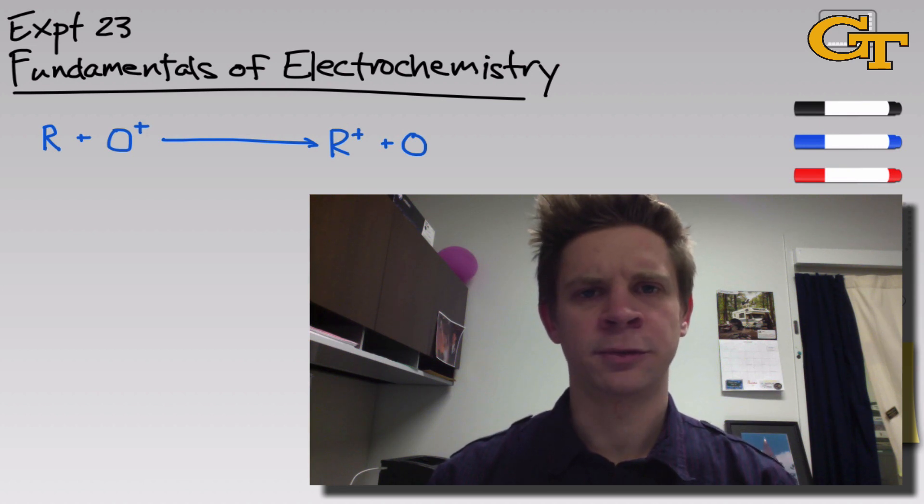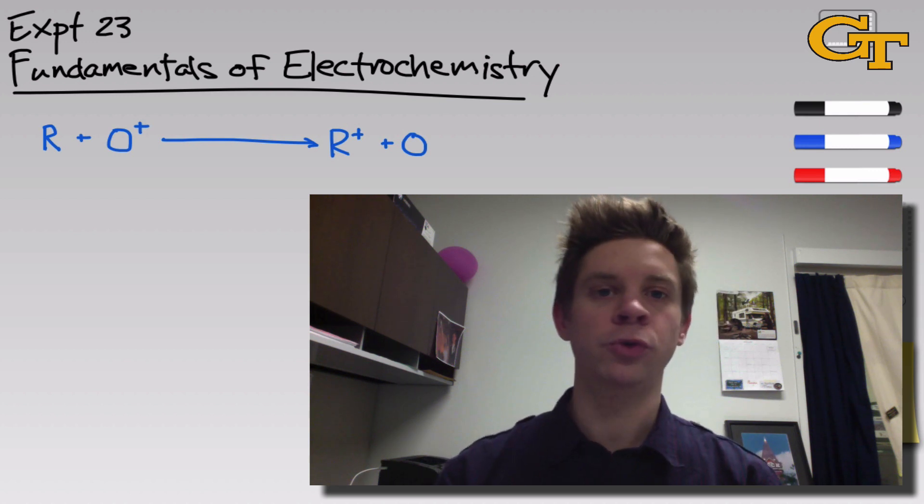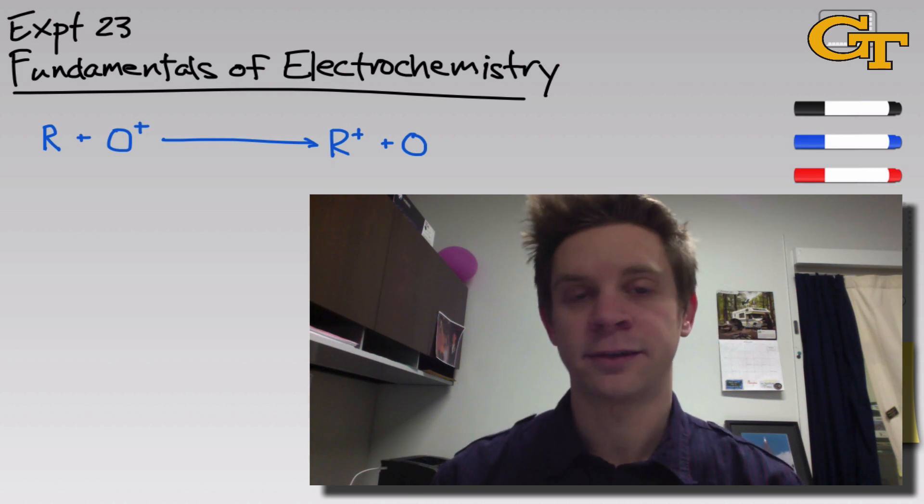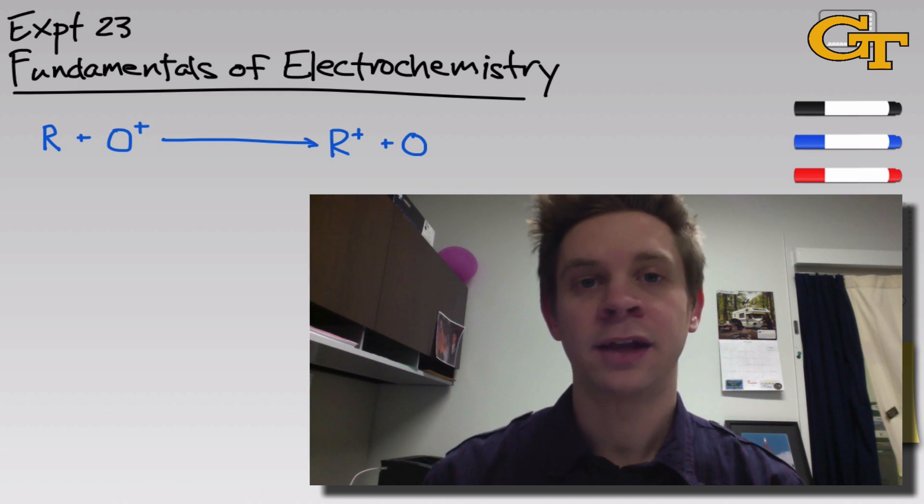If you separate the reductant and the oxidant in space, so that electron transfer has to occur over a macroscopic distance, you can actually cause electrons to move over a distance, and we call that current. We can use spontaneous redox reactions to create electric potential energy differences and drive currents, and this is the basis of batteries.